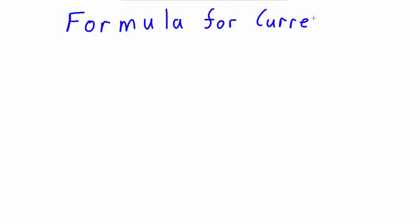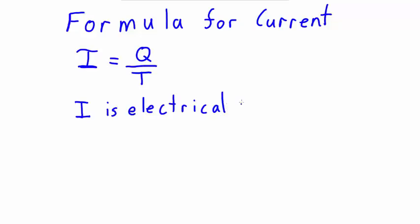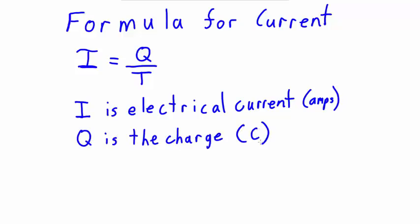I'm now going to show you a formula that you can use to calculate electrical current. The formula is I equals Q over T, where I is the electrical current in amps, Q is the charge that flows through a point in the circuit measured in coulombs, and T is the amount of time that is passed in seconds. So you can use this formula to calculate the current. Have a go at doing this now.